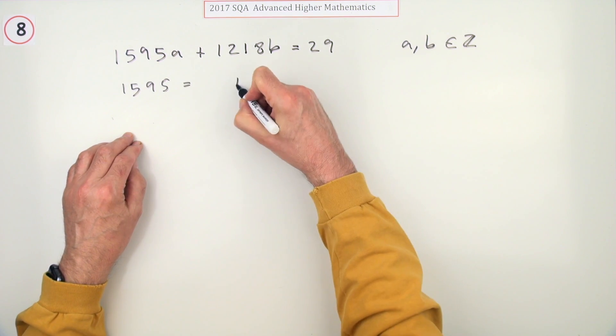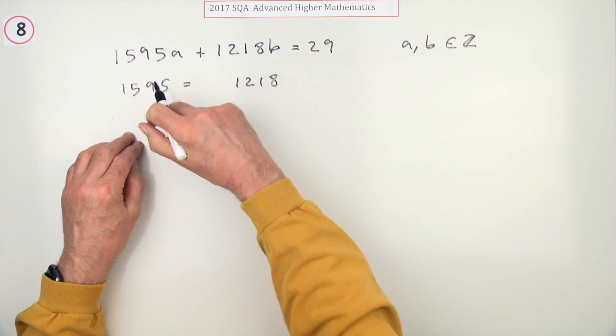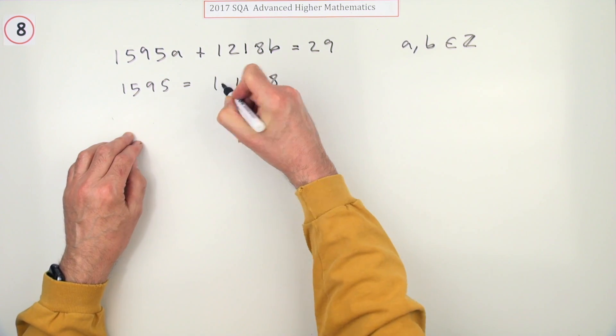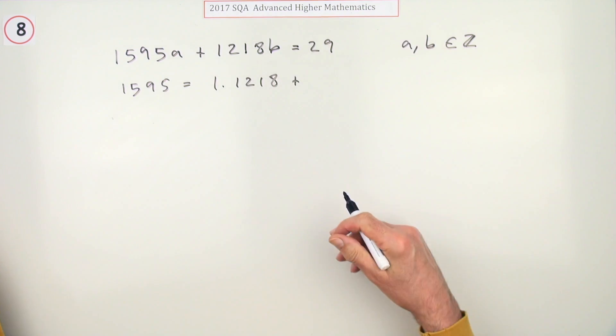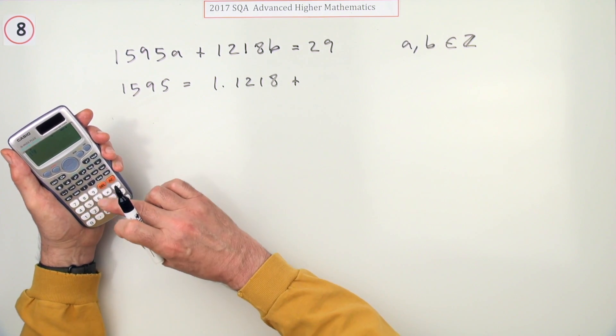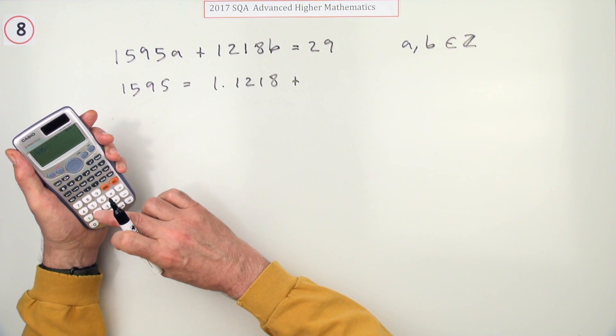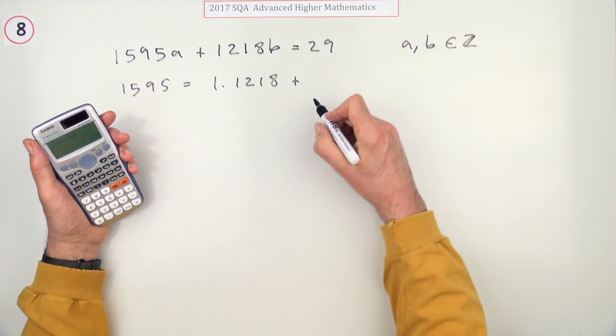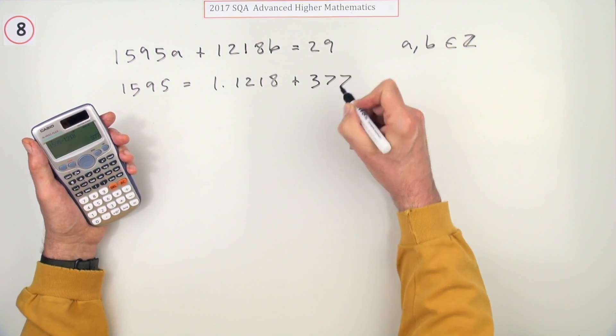Well, pop it down then. How many times does that go into that? Obviously just the once, and how many would be left over? Now I know you could do it in your head, but you're going to be using your calculator for this, aren't you? So I'll just do 1595 minus 1218, which gives me... I just did a subtract there rather than a divide.